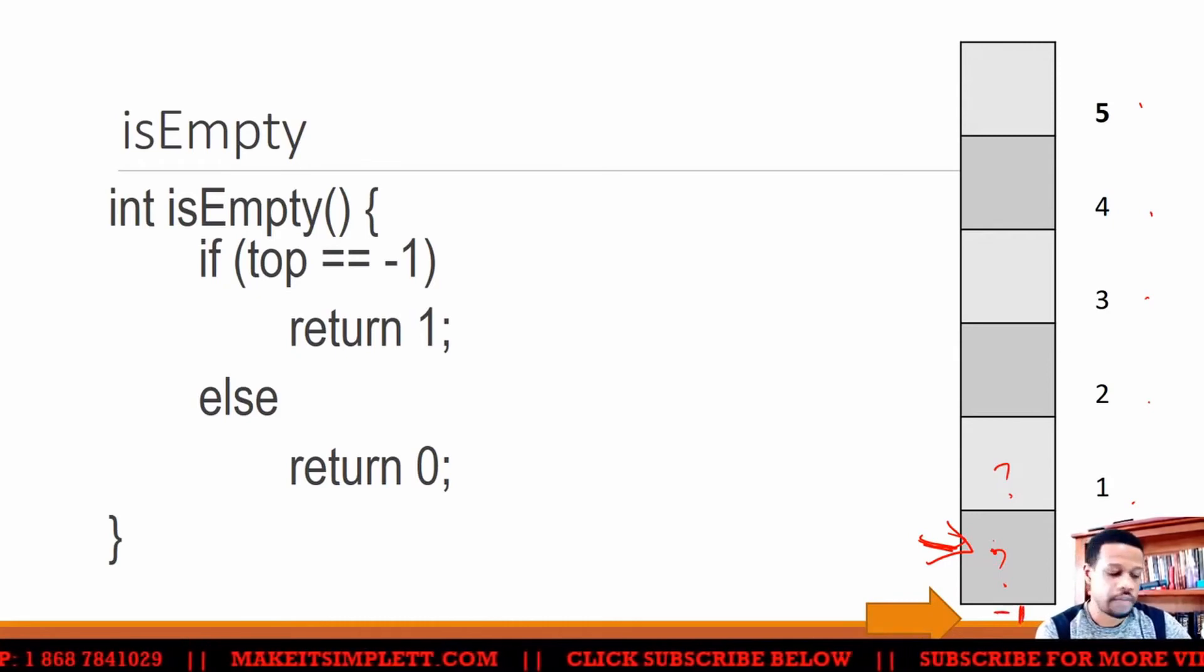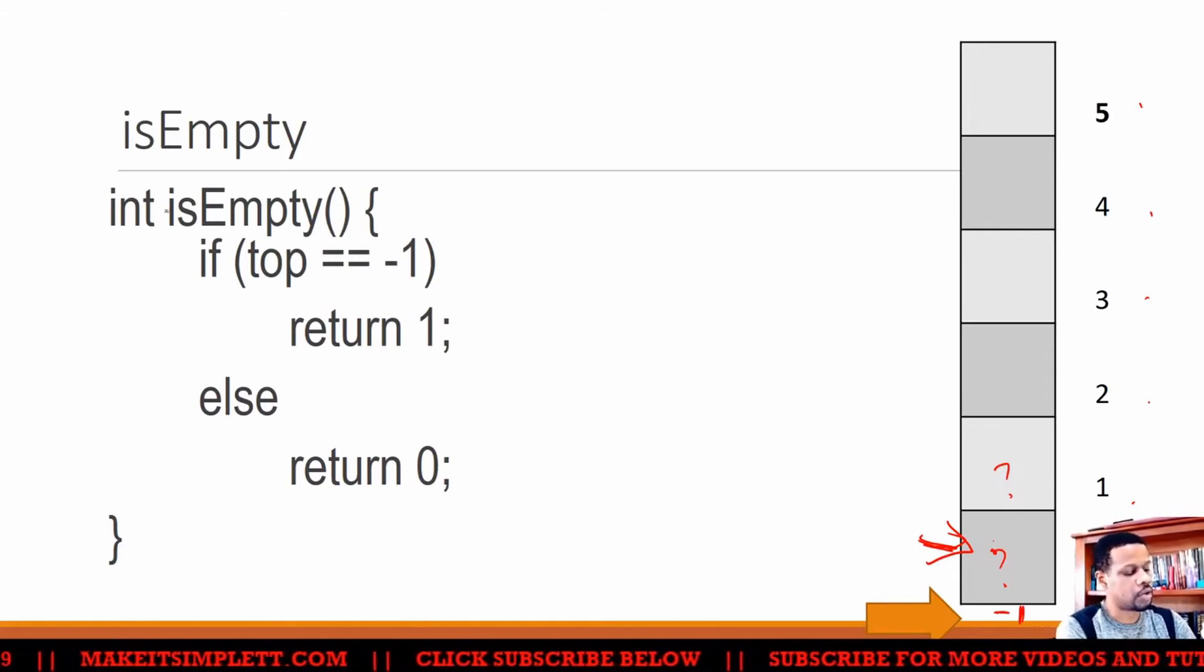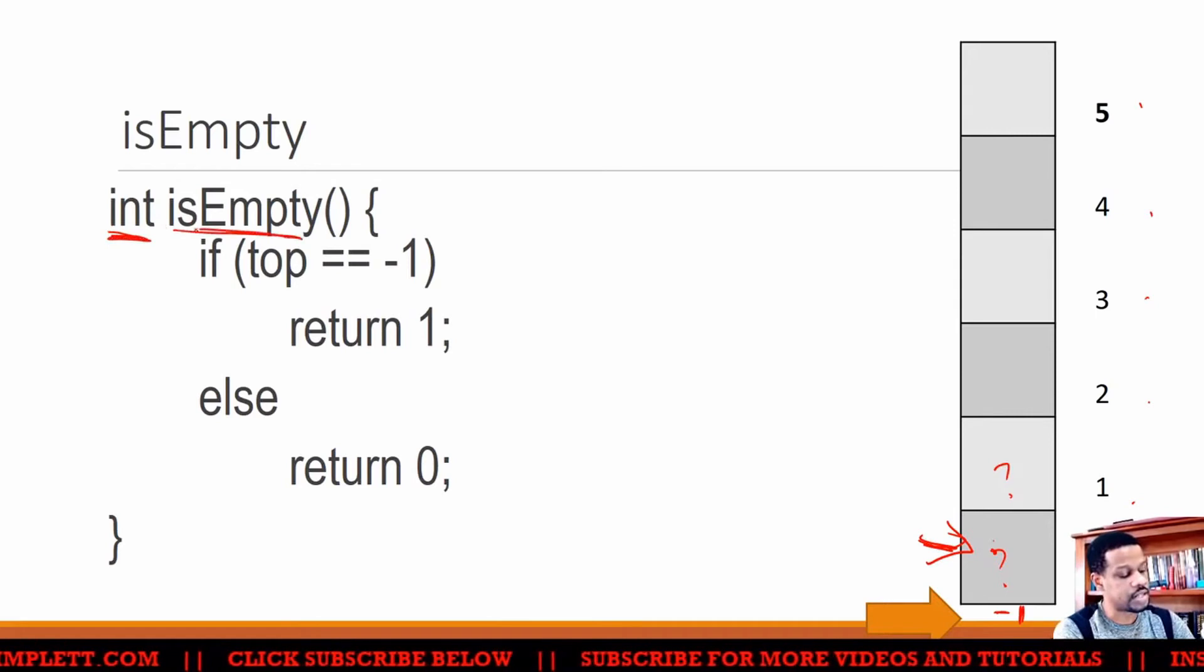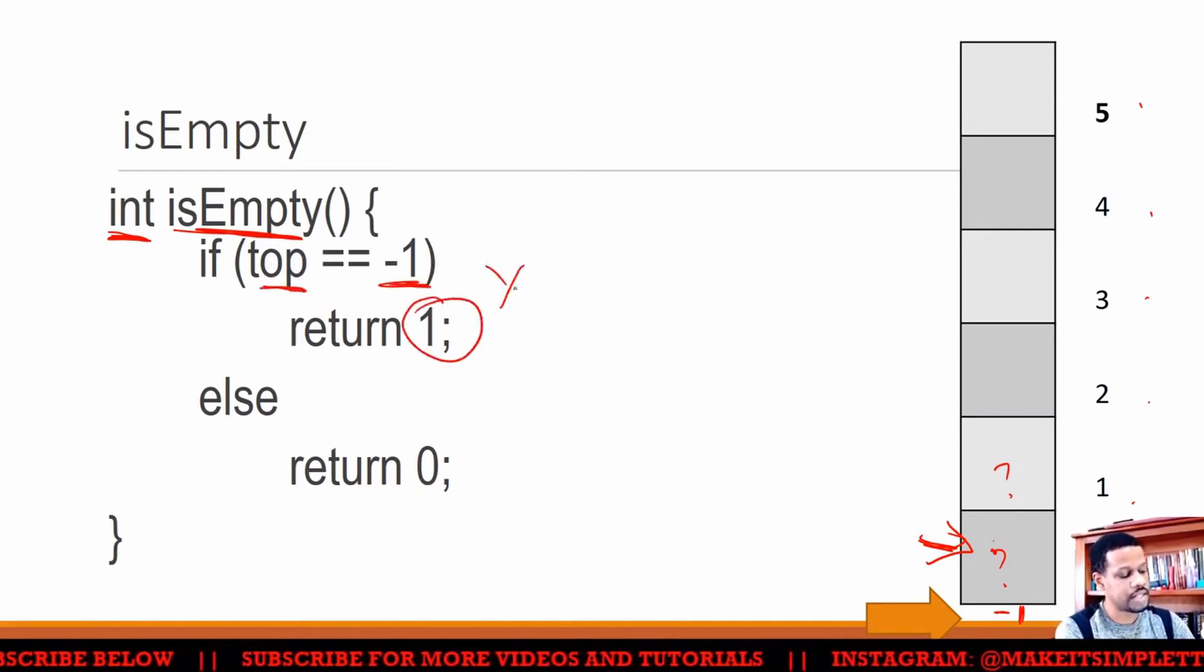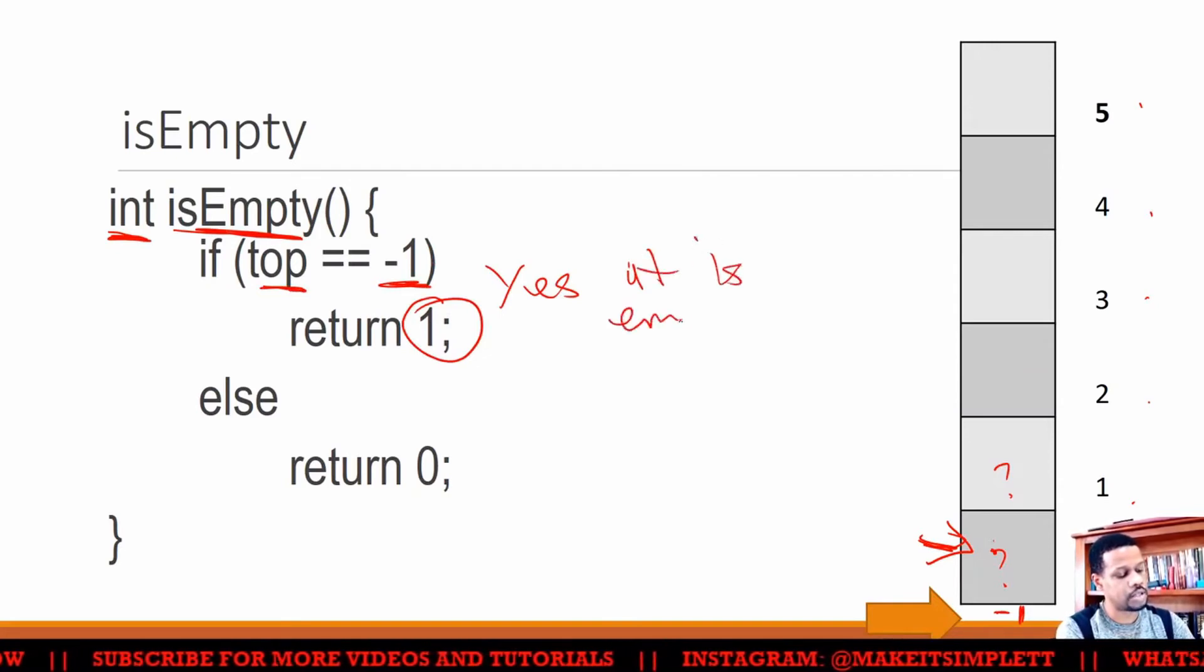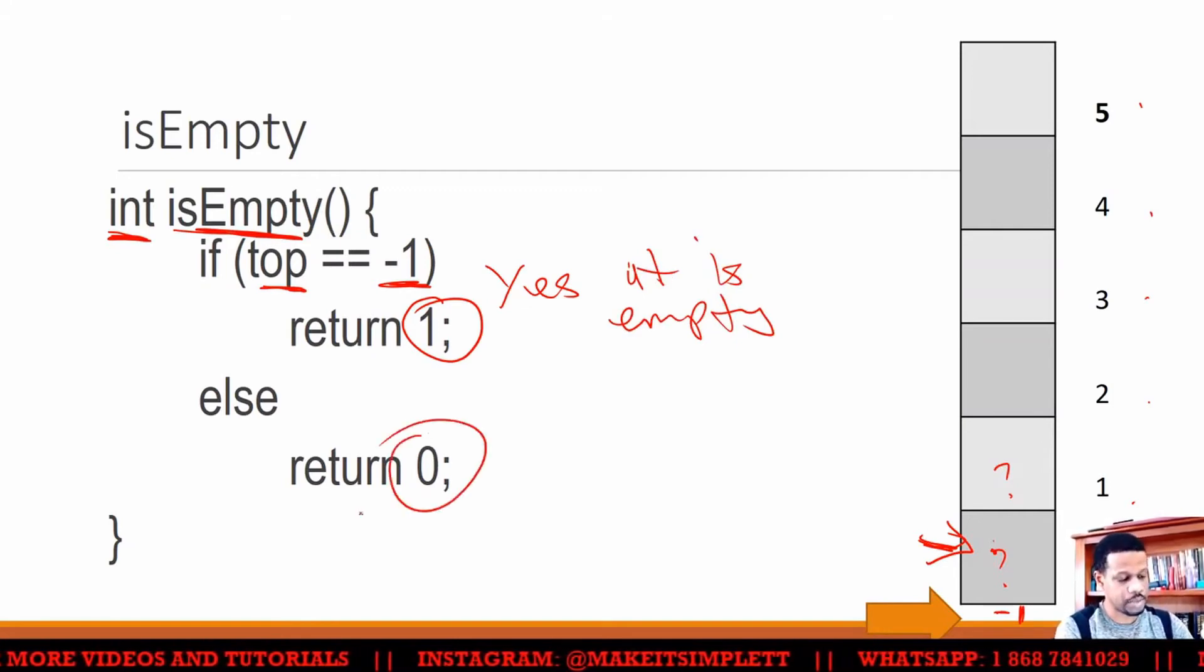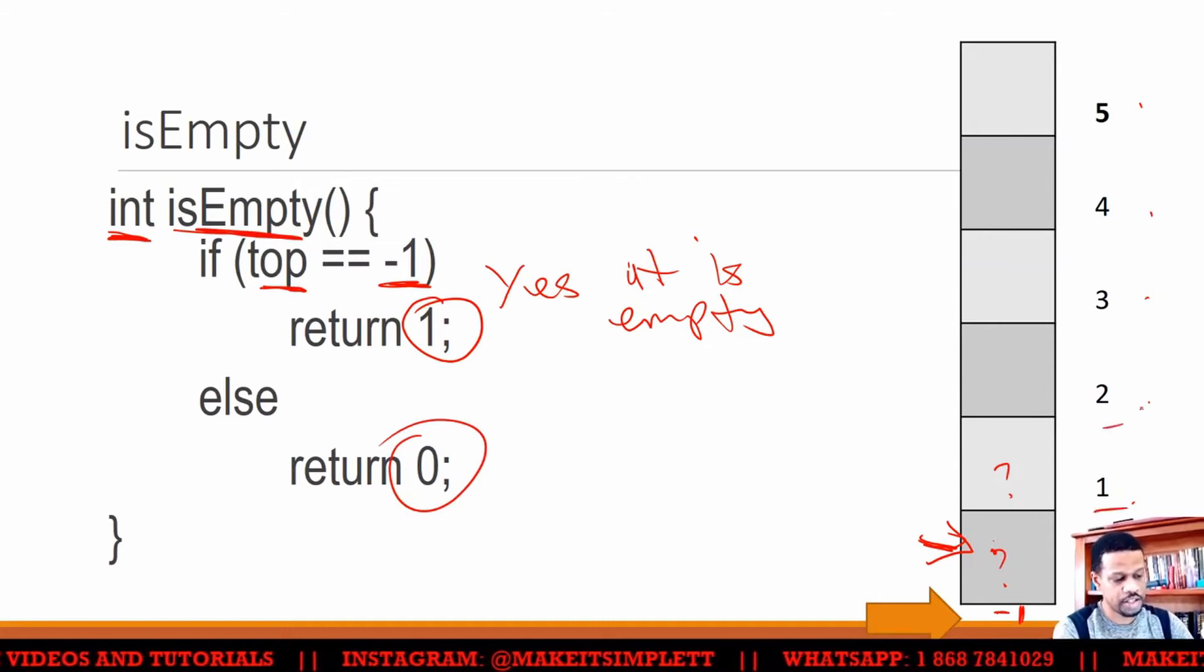If the top is minus one, then you're good to go because you could now write the code for it. You could create a function for is empty. It doesn't receive anything. All is empty is going to check for us: is top equal to minus one? If it returns one, that means yes, it is empty. So if is empty returns one, then you know it's empty. If it returns zero, that means it's not empty because top is not minus one. Top is one of these numbers here.